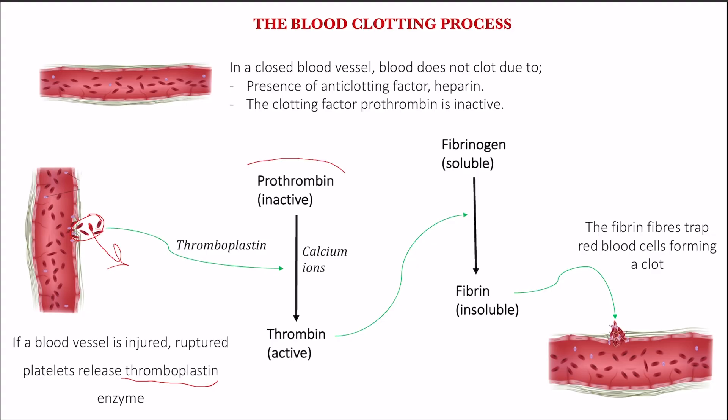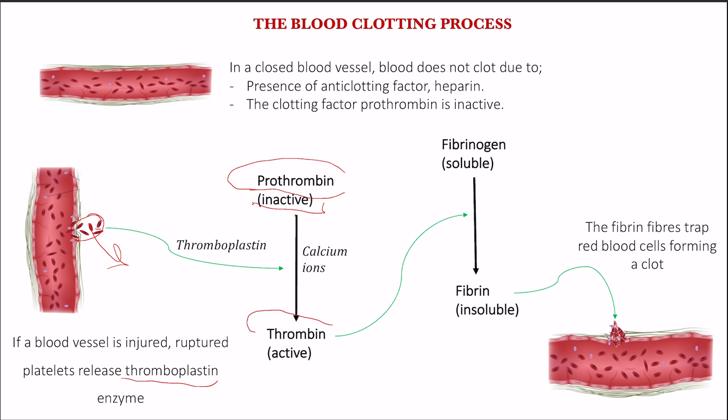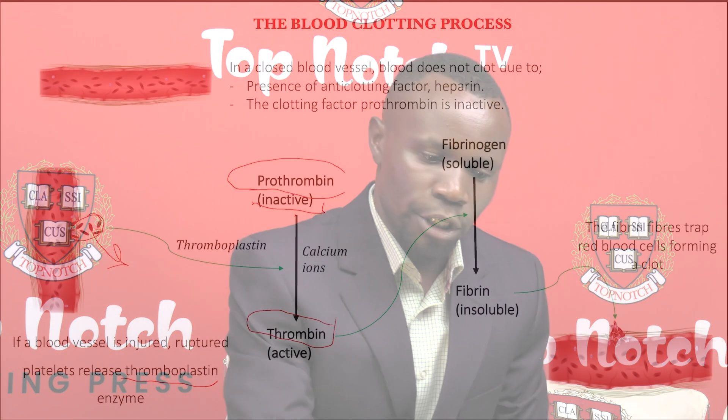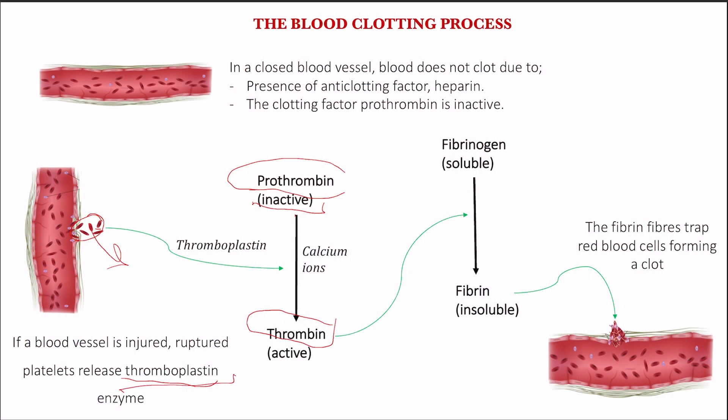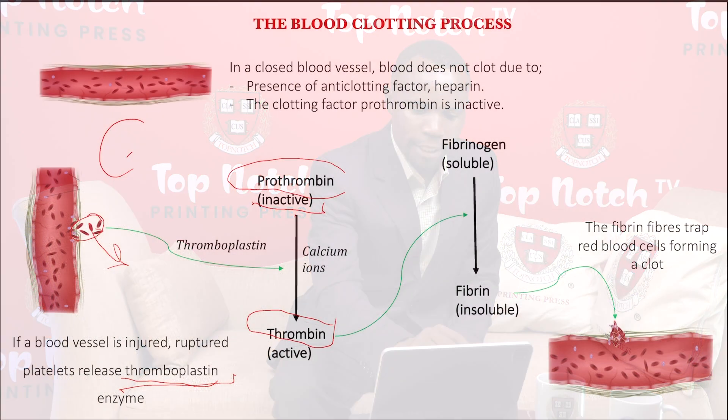The second role of thromboplastin enzyme, as shown in our flowchart, is to activate prothrombin — converting it from its inactive form to an active form called thrombin. Just like during digestion when inactive pepsinogen is activated to pepsin, in the same way, inactive prothrombin is activated to the active enzyme thrombin. This activation by thromboplastin requires the presence of calcium ions.